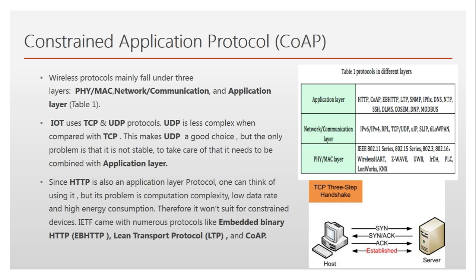Being connection-oriented means HTTP involves three-way handshaking — a client or host wants to connect to the server using SYN, SYN-ACK, and ACK — meaning the connection is established before data is sent. This complexity, along with low data rate and high energy consumption in HTTP, was a problem. To get rid of these problems, IETF came up with numerous protocols like embedded binary HTTP (eb-HTTP), Lean Transport Protocol, and finally CoAP.